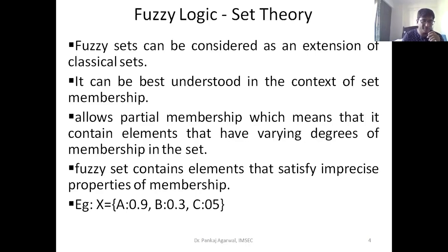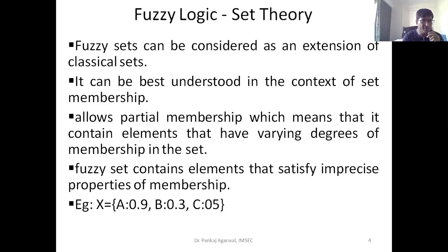Each and every value that exists within a fuzzy set has associated with it a degree of membership, which allows either partial membership or full membership. Full membership means the value 1.0, and absolute non-membership is zero. In between, there can be any range of values, so elements have varying degrees of membership in the set. A set with varying degrees of membership is called a fuzzy set.